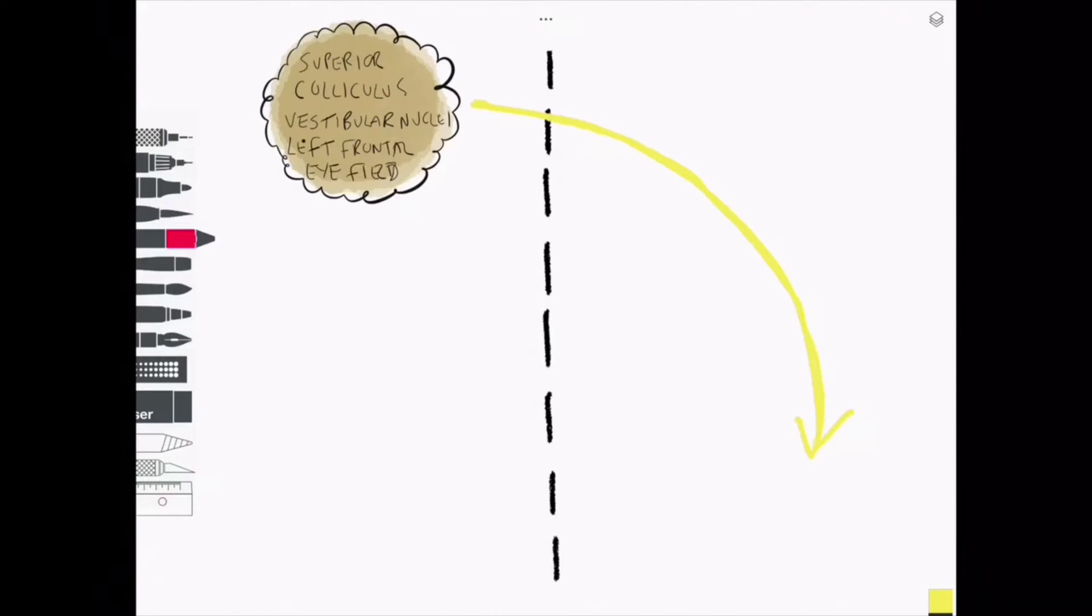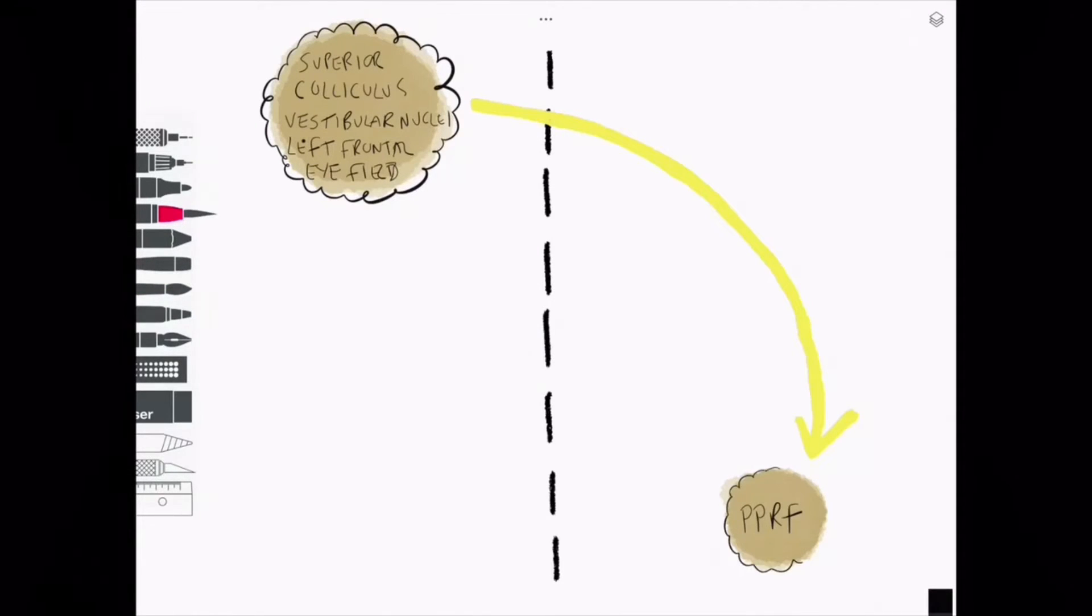The superior colliculus sends fibres across the midline to the perimedian pontine reticular formation, often shortened to PPRF, which is the control centre for horizontal gaze in the pons.